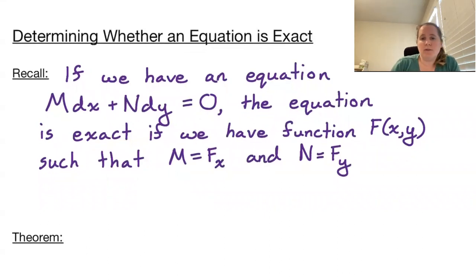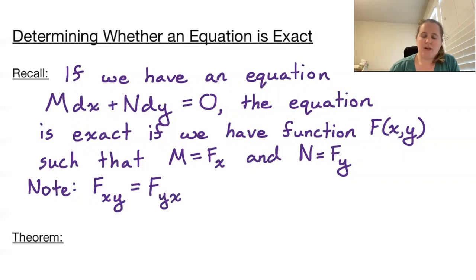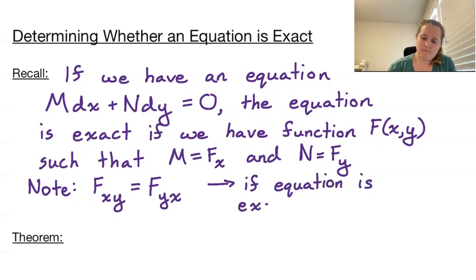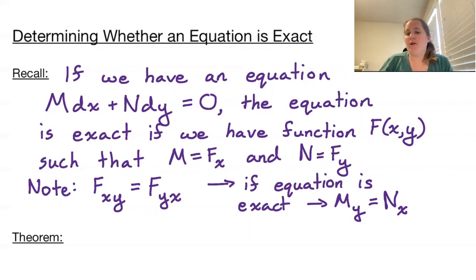Also note, when we review our partial derivatives, the mixed partials — doing the partial with respect to x followed by the partial with respect to y — should equal the partial with respect to y followed by the partial with respect to x. So what we get is: if the equation is exact, then the first partial with respect to y of M should equal the first partial with respect to x of N. As long as we have our continuity requirements, all we need to check is that the partial with respect to y of M equals the partial with respect to x of N.